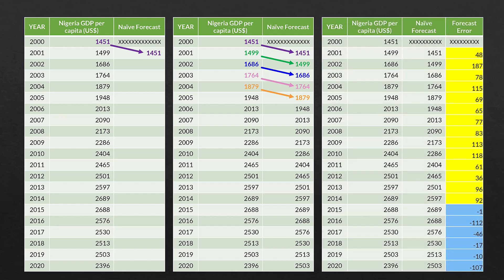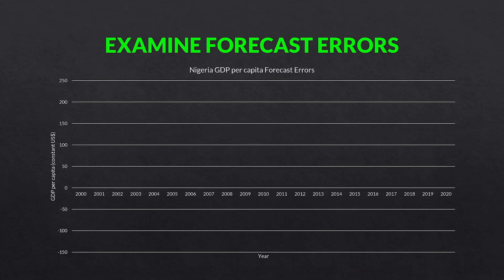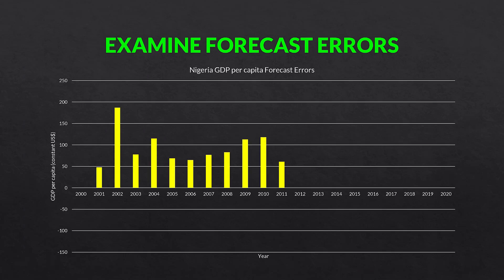Then we find forecast errors. The forecast error is the actual value minus the forecast value. In the case of the year 2001, it's 1499 minus 1451, and we do that all the way down the column. We can see that we have positive forecast errors in the first two thirds of the series and negative forecast errors in the last third of the series. So always examine your forecast errors.